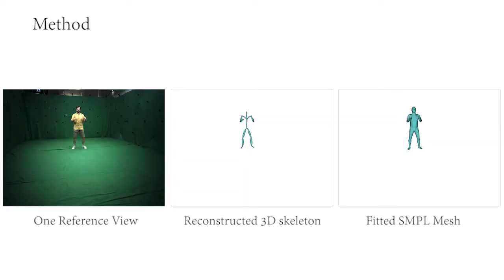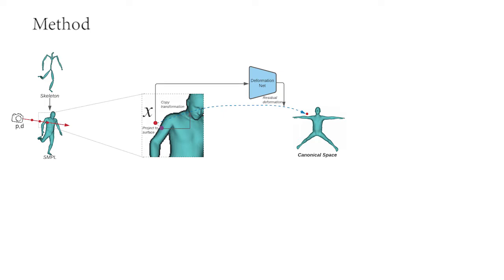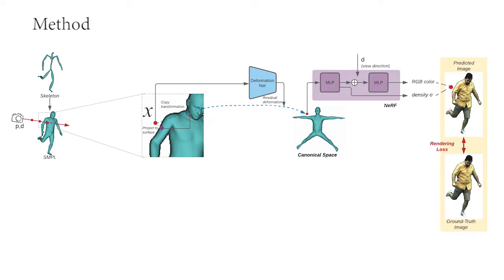The input poses to our method are extracted from the video frames using an off-the-shelf motion capture system. Our method leverages the SMPL model as a 3D proxy. Given the skeletal pose, we synthesize images by sampling points along camera rays near the posed SMPL mesh. For each sample point X, we un-pose it based on its closest surface point and predict the residual deformation to move X to the canonical pose space. We then learn the radiance field in the canonical pose space to predict the color and density for X using 2D supervision.